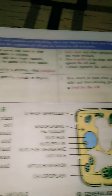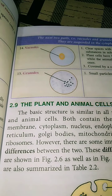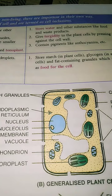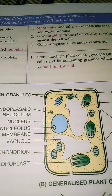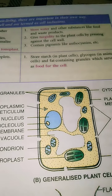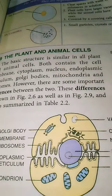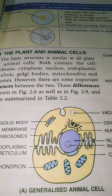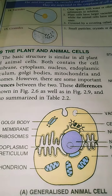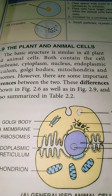Now we move to granules, which is the last cell organelle. Granules are mainly concerned with the storage of starch and glycogen. Starch is stored in plant cells and glycogen in animal cells, with the help of granules.